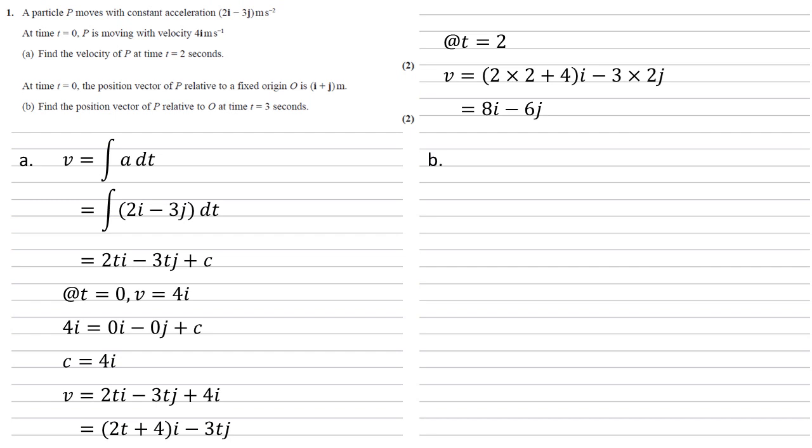At time t equals 0, the position vector of P relative to a fixed origin O is i plus j meters. For part B, we need to find the position vector of P relative to O at time t equals 3 seconds.